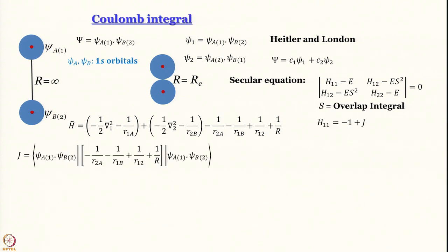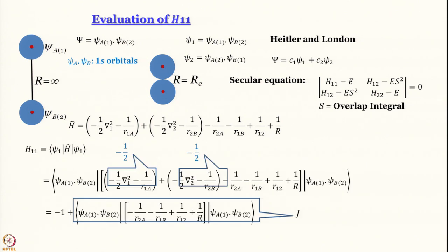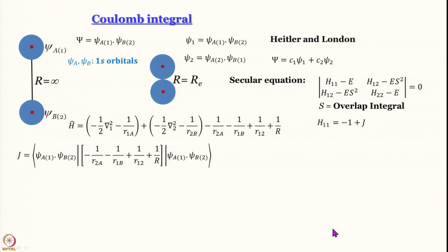We have H_11 equal to minus 1 plus J, where J is called the Coulomb integral — we are already familiar with Coulomb integrals. Let us work out why it carries that name.